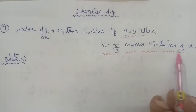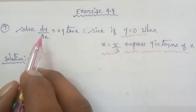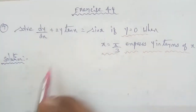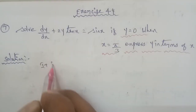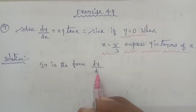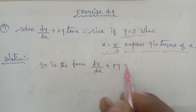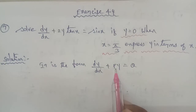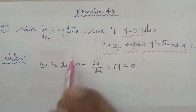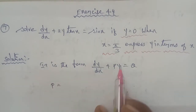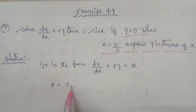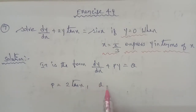Express y in terms of x. So first, understanding now — it is a linear differential equation of first order. Therefore it is of the form dy by dx plus Py equal to Q. Here we compare: P is the y-term coefficient, so P is equal to 2 tan x, and Q is equal to sin x.